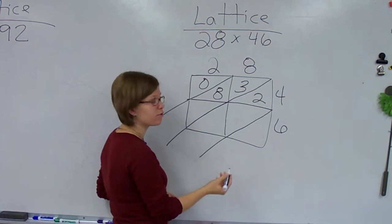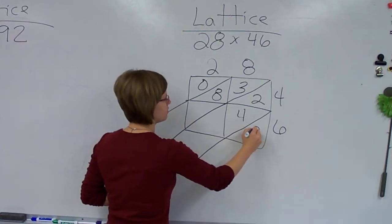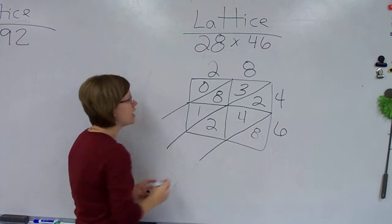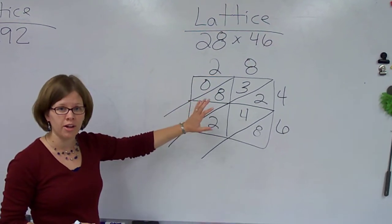8 times 6 is 48. And 6 times 2 is 12. Now that I've done all my multiplication, I'm ready to add.